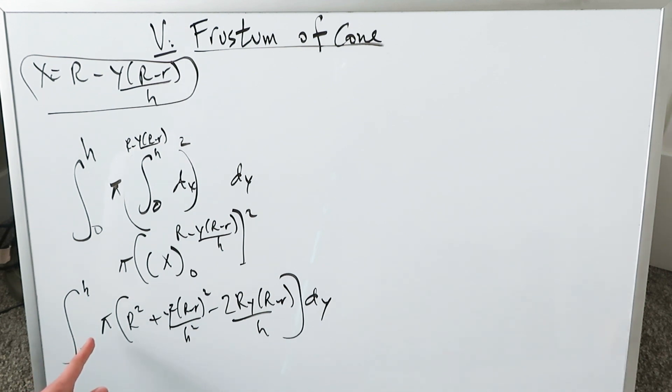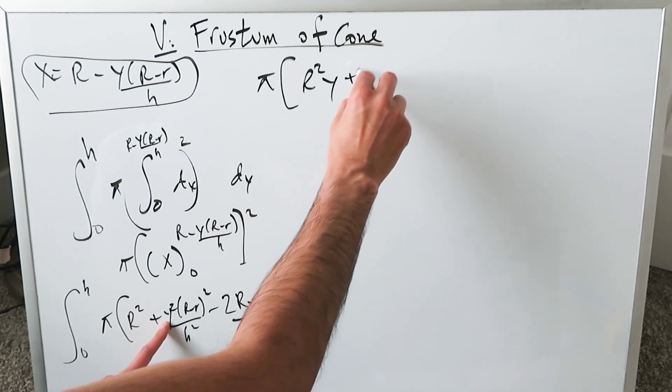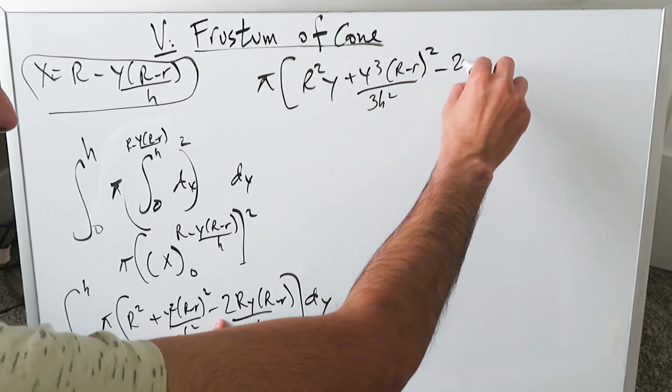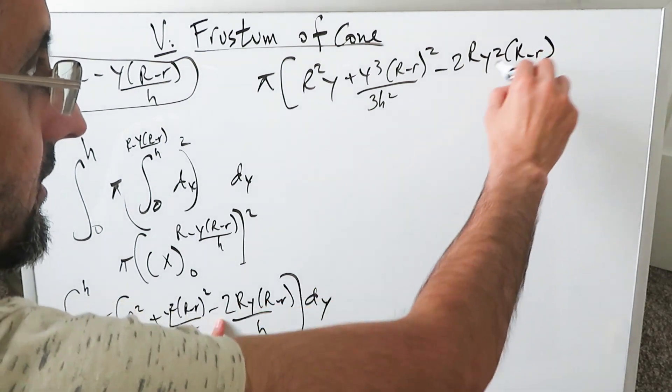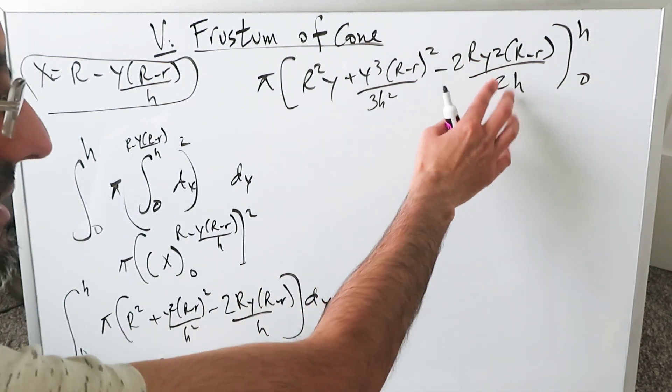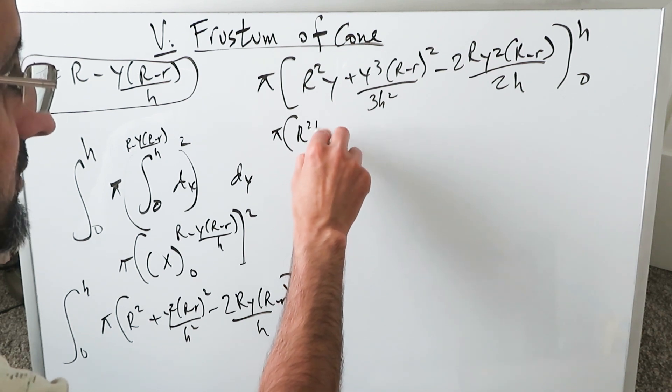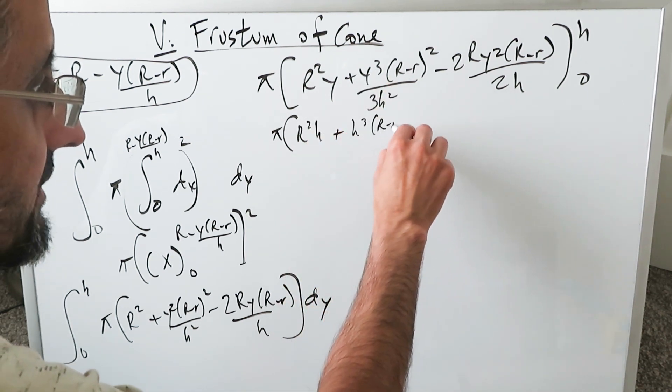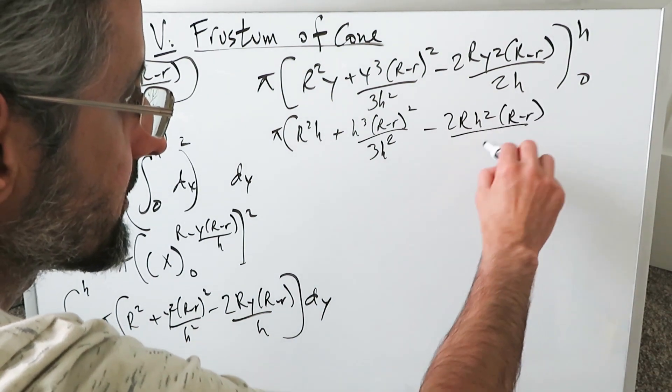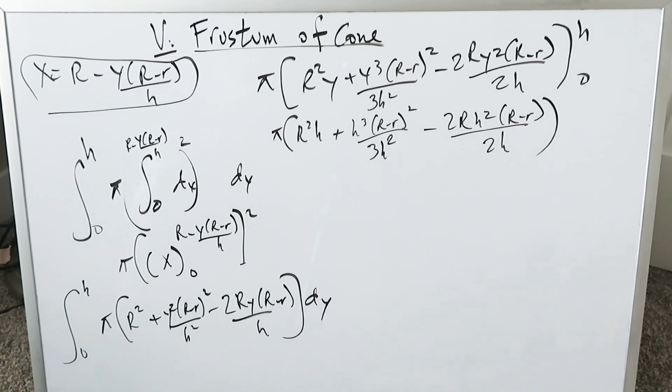You can bring the pi out and then you can look at all of these polynomial items here and then bring in the anti-derivative with the next step. You'll have a pi and now the anti-derivative with respect to dy, the y variable will come in. Here you'll have a r square y. Here you have a y square which will become a y cube over 3 h square. Then you have a r minus r whole square. Look right over here. Minus 2ry square r minus r over 2 h and then upper limit h lower limit 0. This y over here become a y square over 2 which combines and you see what you have. Now let's bring in the upper limit. You'll have a r square h plus. You'll have a h cube r minus r whole square over 3 h square minus 2 r h square times r minus r divided by 2 h and you have to keep simplifying this until you arrive at that interesting volume formula.